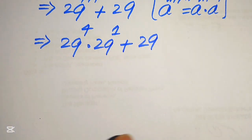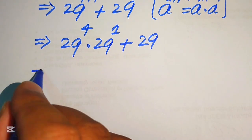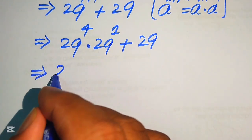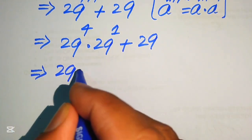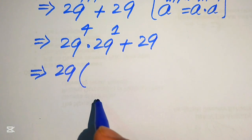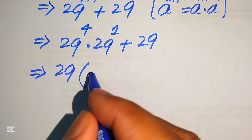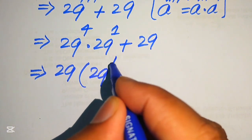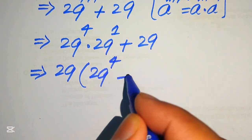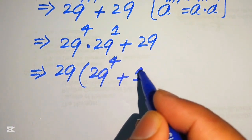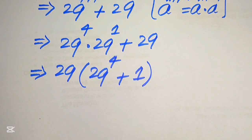Now we take 29 as a common factor from both terms, and we get 29 multiplied by the quantity 29 to the power of 4 plus 1.